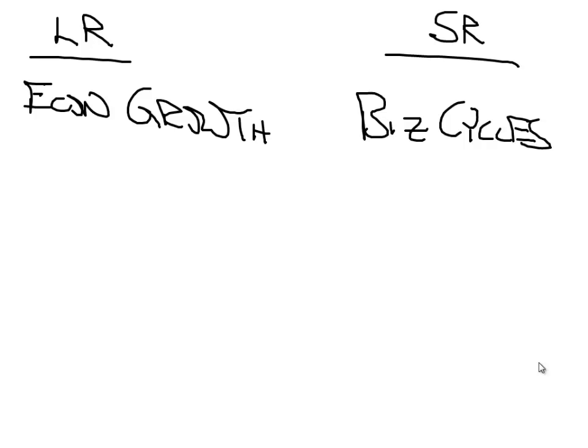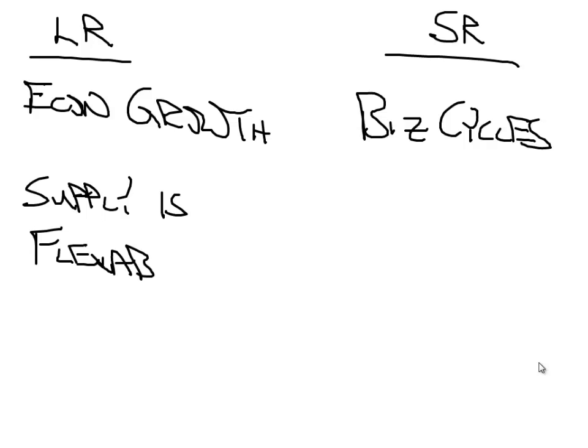What makes long run long run? Long run is long enough such that supply is flexible — in other words, we can produce as much as we can produce. It's long enough such that we can change the number of factories that we have, the number of people we've employed. All our factors that we have are variable.